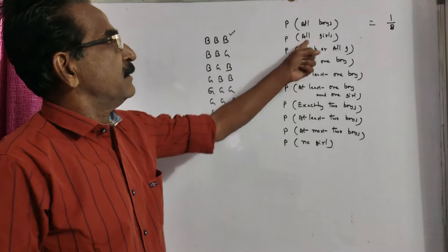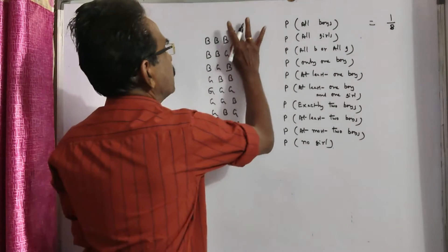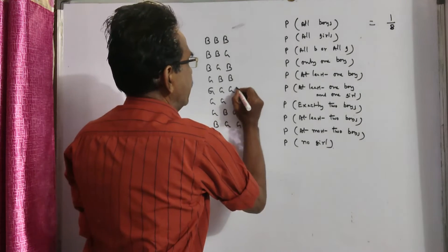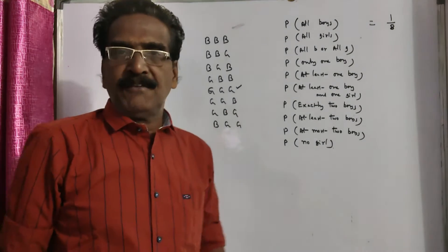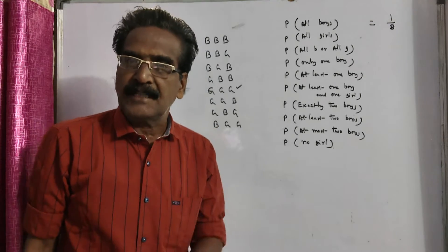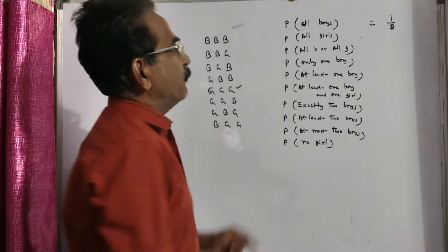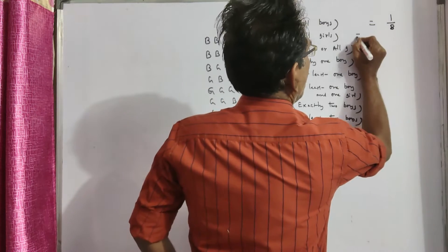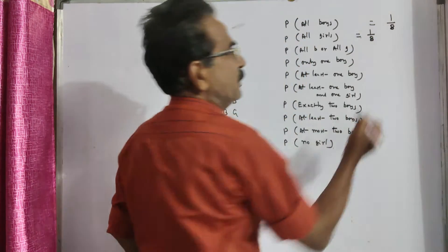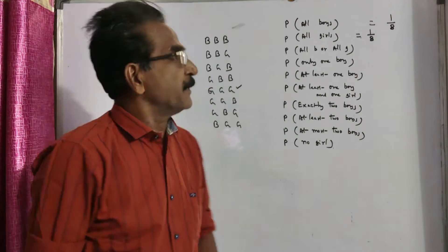In the same case, probability of all girls. We have only one outcome where all three children are girls. So favorable outcomes is one, total number of outcomes is eight. So one by eight is the required probability.